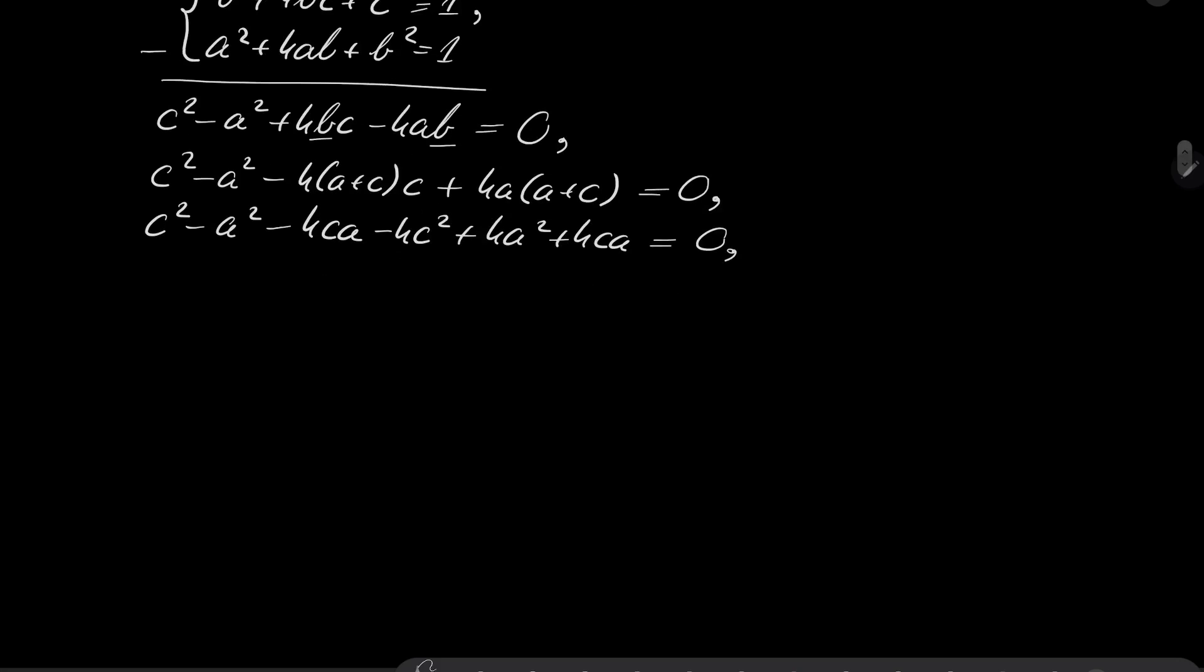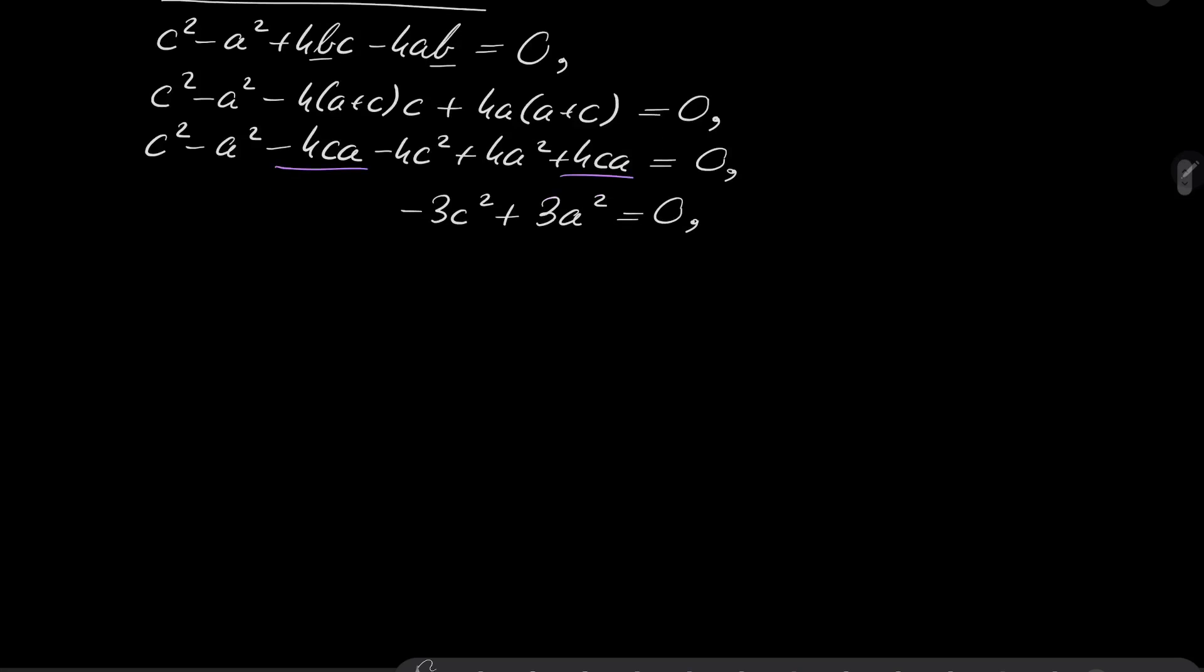Alright, c² - a² - 4ca - 4c² + 4a² + 4ca = 0. And now a bunch of cancellations are possible. First, -4ac + 4ac cancels. So we have -3c² + 3a² = 0. And after putting one thing on the left hand side, the second one on the right hand side, we get that either a = c or c = -a.